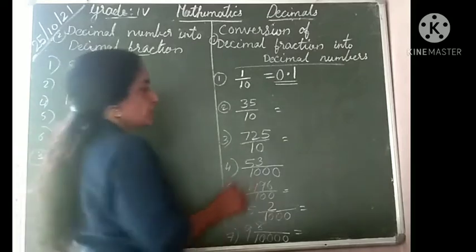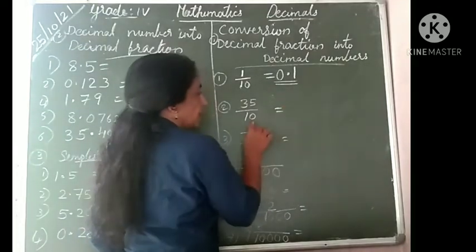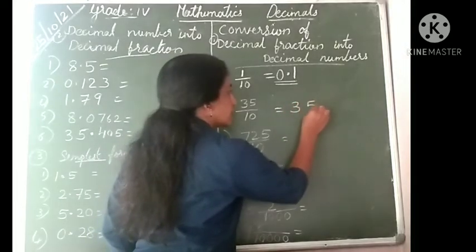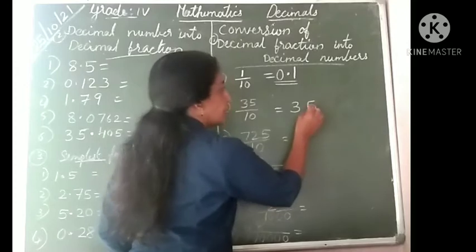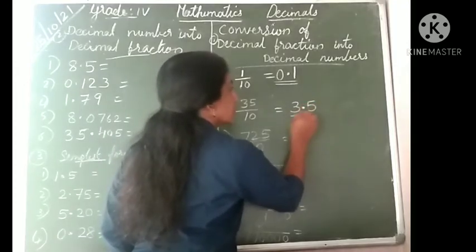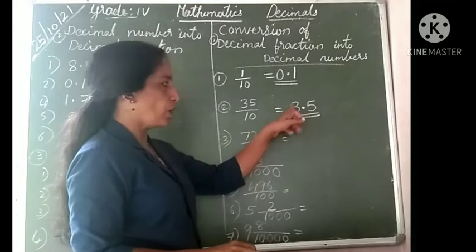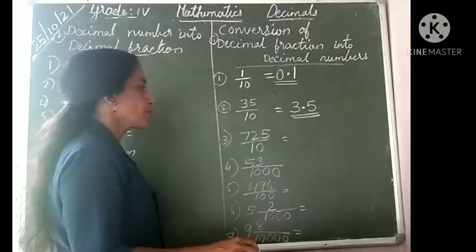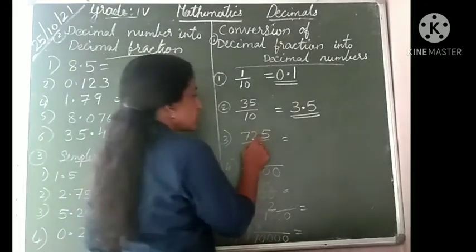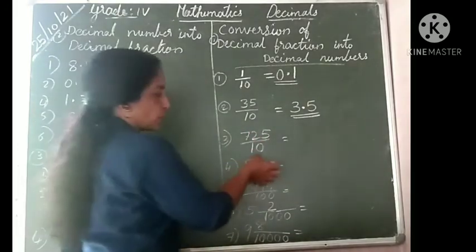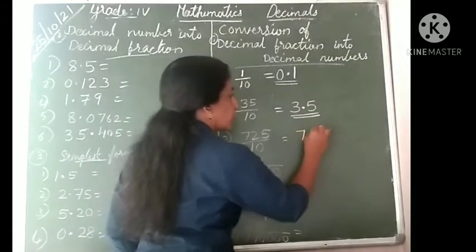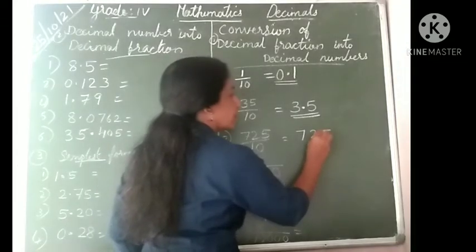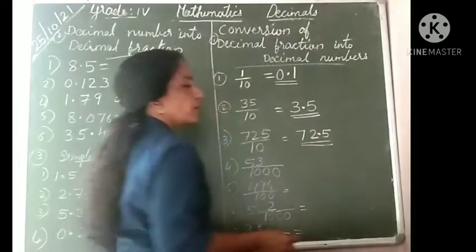Next: 35 divided by 10. Here denominator is 10, having one zero. Write the numerator 35, and place the point one digit from the right — giving 3.5. Here 3 is already the whole part, decimal point, and decimal number. Next: 725 divided by 10. Denominator is 10, one zero. The numerator is 725. Place the point one from the right — answer is 72.5.